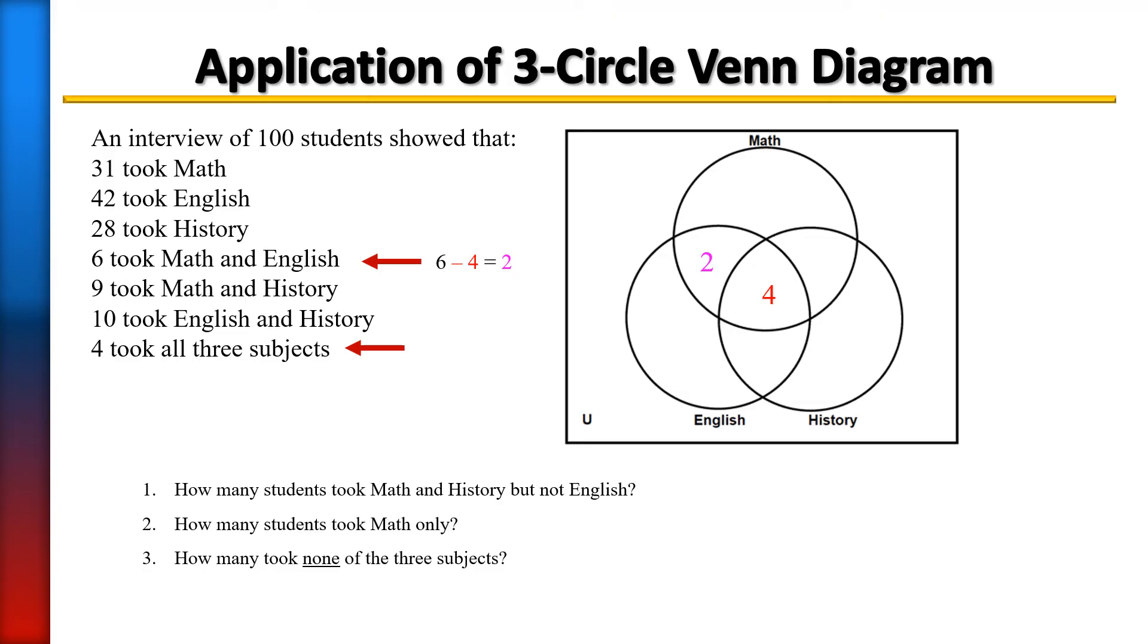Next, we want to focus on math and history. There were 9 students who took that, so we're going to subtract 4 because there's 4 already there. Nine take away 4 is going to give us 5, so 5 took math and history.